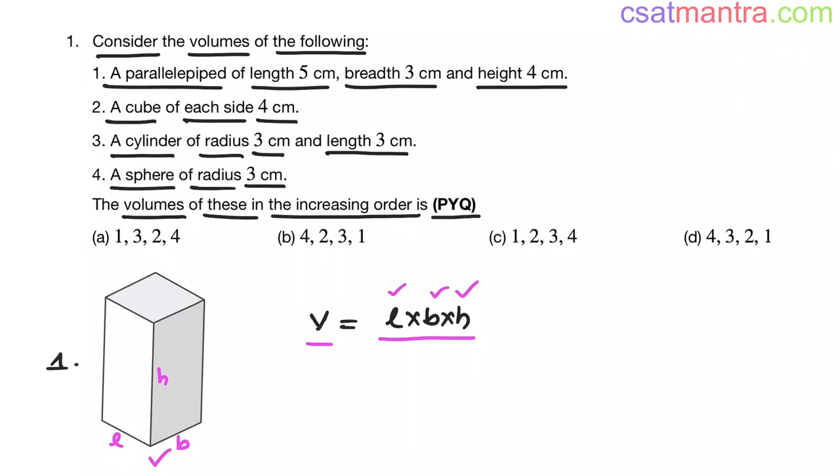Volume of parallelepiped: length is 5, breadth is 3, height is 4. So 5, 3's are 15, 15, 4's are 60. This is 60 cm cube.